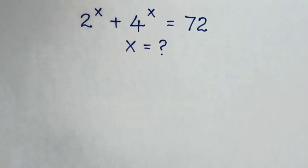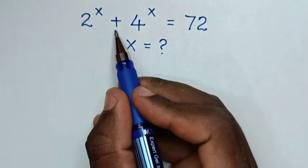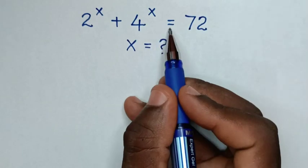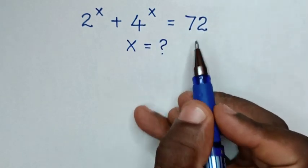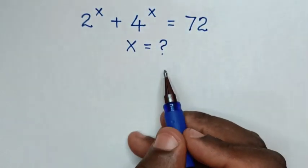Hello! How to solve 2 power x plus 4 power x is equal to 72, to find the value of x.